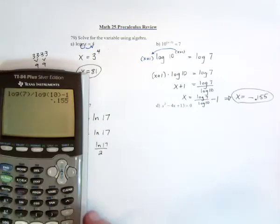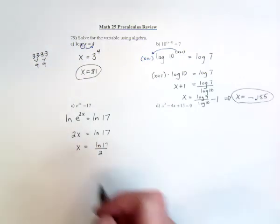And that is natural log of 17 close the parentheses, gets divided by 2: 1.417 with a decimal.